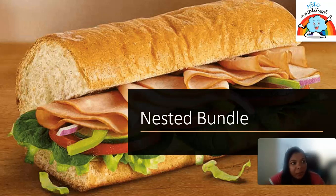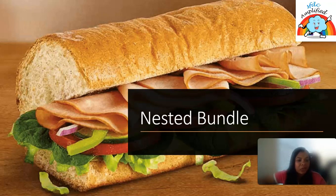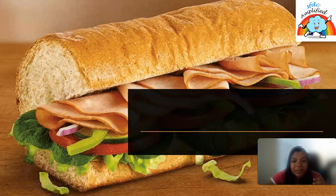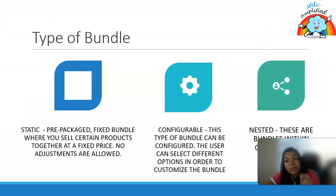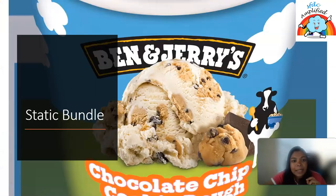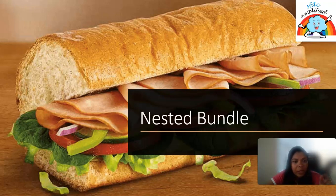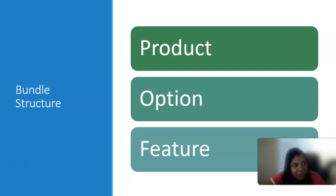For nested bundles, we can take the example of Subway. In a Subway sandwich, there are multiple types of sandwiches, and within each sandwich there are multiple types of veggies and other things to choose from. Nested bundle means there are bundles within other bundles, so Subway sandwich is a good example of a nested bundle.